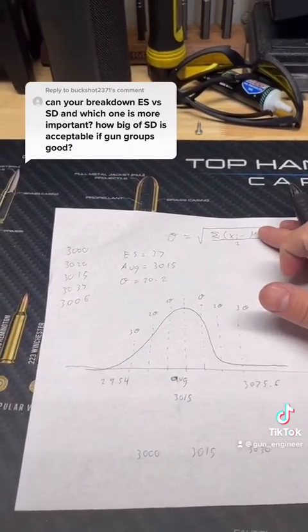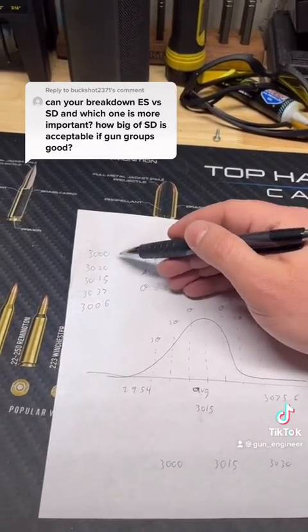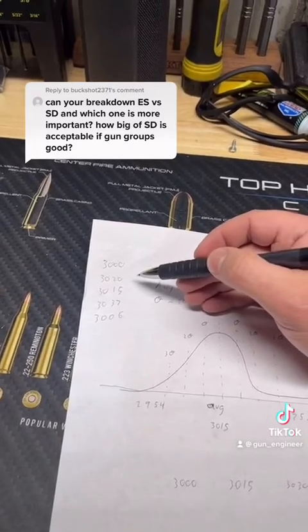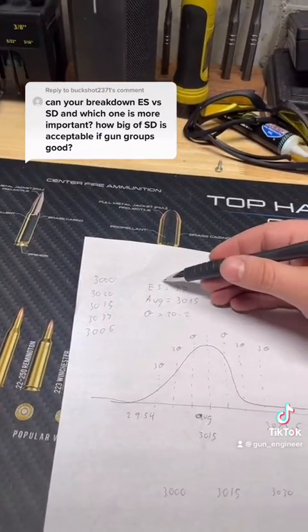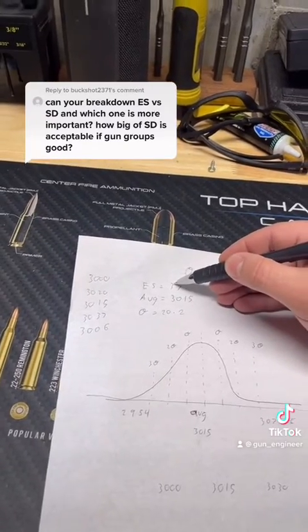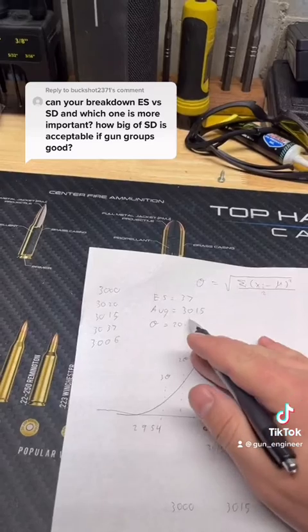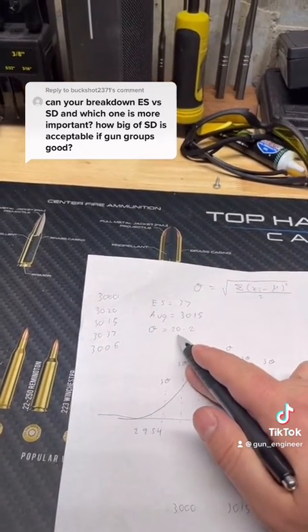So over here I've got five different numbers simulating velocities in a five-shot string. From these five different shot velocities you get an extreme spread of 37, just the high minus the low, average of 3015, and then a standard deviation comes out to be 20.2.